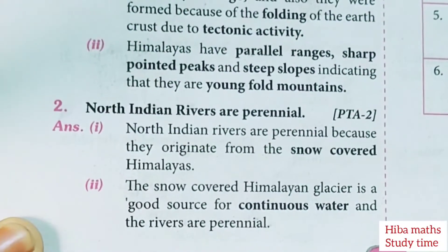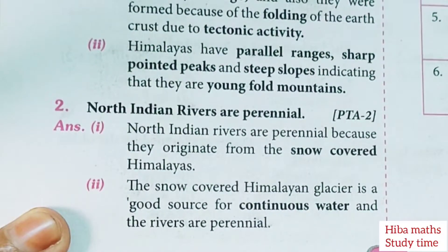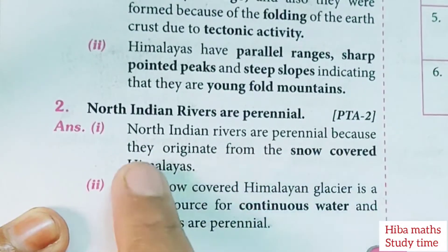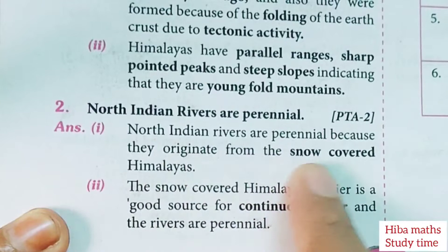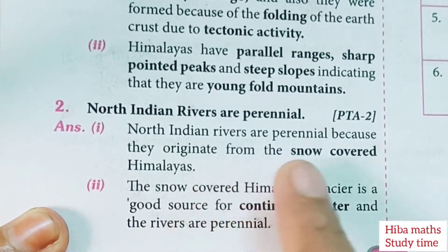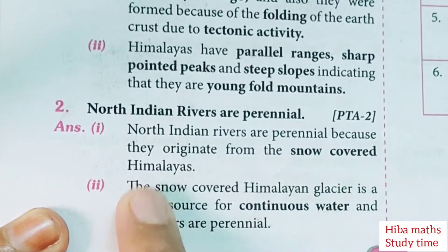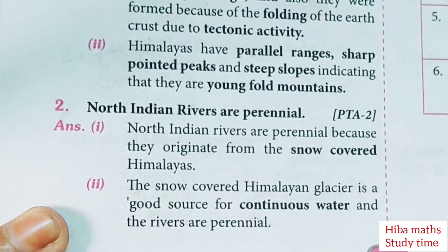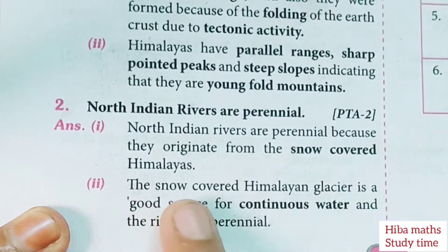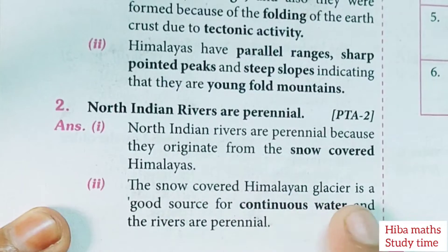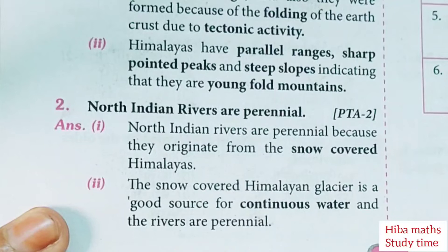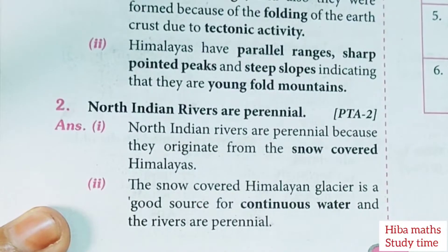North Indian rivers are perennial because they originate from the snow-covered Himalayas. The snow-covered Himalayas is a good source of continuous water, and therefore the rivers are perennial — the Himalayan glaciers ensure a perennial water supply.